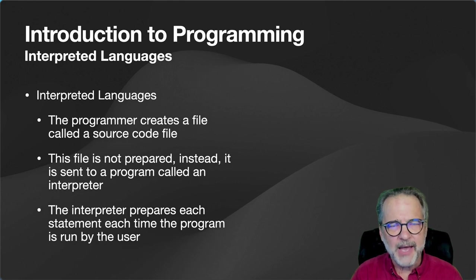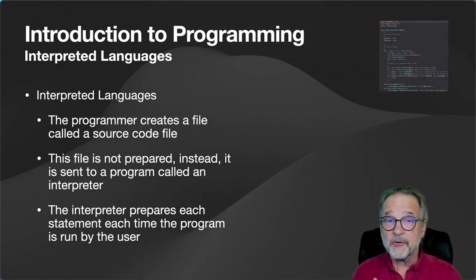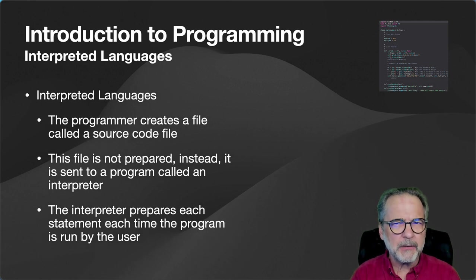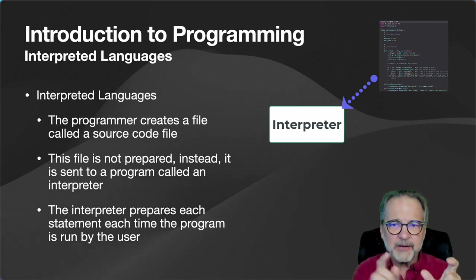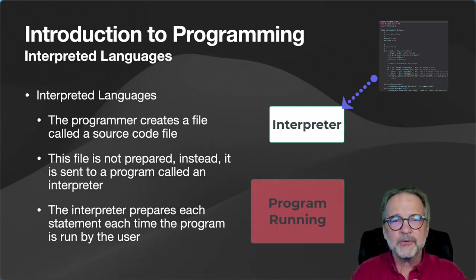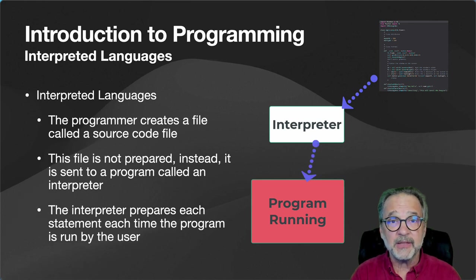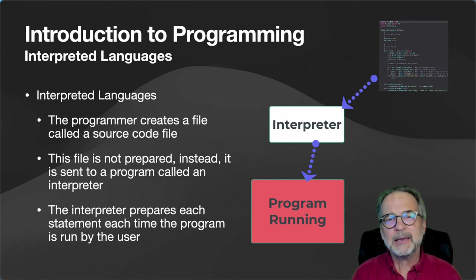What's an interpreted language? The programmer creates a source code file just like in a compiled language. However, the file is not compiled or linked. Instead, it is sent to a program called an interpreter. The interpreter reads each line of code — each statement — every time the program is run by the user, converts it into machine code, and has the CPU execute it. It's actually more complicated than that, but that's an easy way of thinking about it.